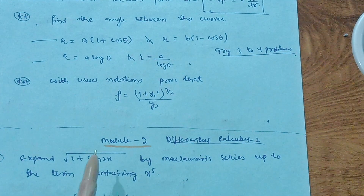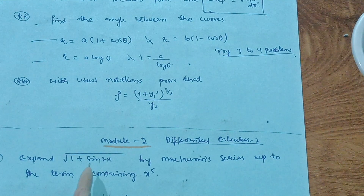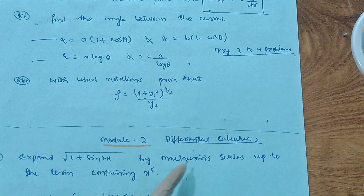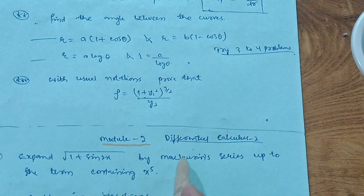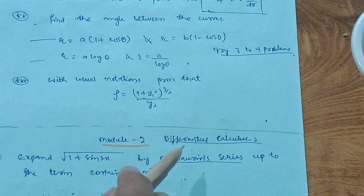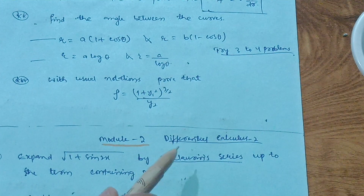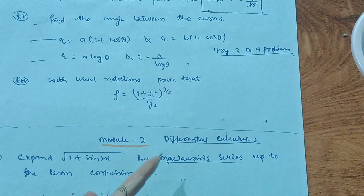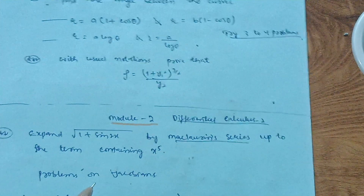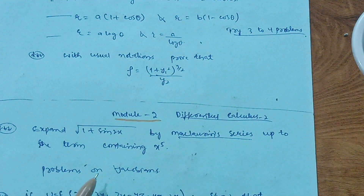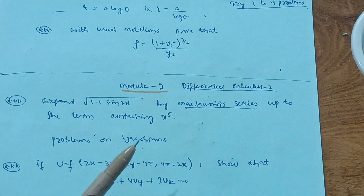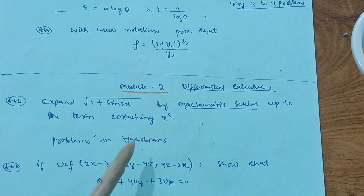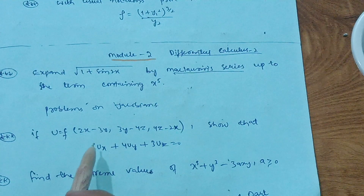Next is Module 2, Differential Calculus 2, which covers higher order topics. The most important question is: expand √(1 + sin 2x) by Maclaurin series up to the term containing x⁵. Maclaurin series will be a definite question — try three to four problems from this topic; it is a simpler concept. Next, focus on problems on Jacobians, which is also a matrix-related concept and quite simple.